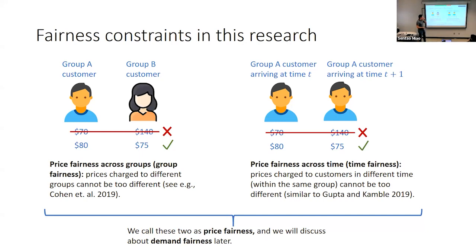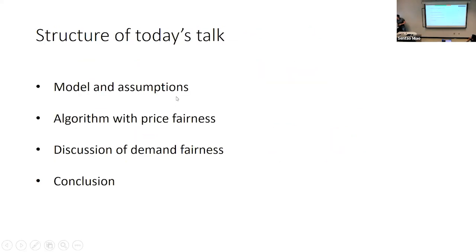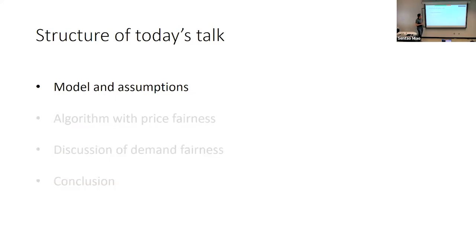To summarize, we call these two types of constraints price fairness, because we are looking at the price. In the second half of the presentation, if time permits, I will briefly talk about another notion called demand fairness. Today's talk is structured as: first the model, then the algorithm dealing with price fairness, and if time allows, demand fairness, followed by the conclusion.